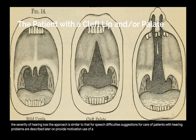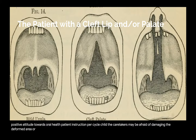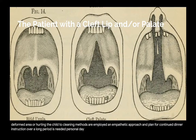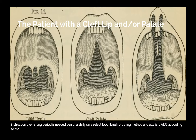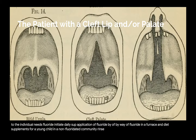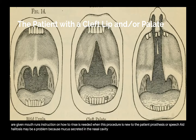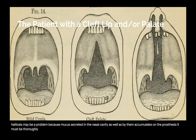Provide motivation: use of a motivational interviewing approach can help patients gain a positive attitude towards oral health. Patient instruction — personal oral care: for a small child, caretakers may be afraid of damaging the deformed area or hurting the child, so cleaning methods must be employed. An empathetic approach and plan for continued instruction over a long period is needed. For personal daily care, select toothbrush, brushing method, and auxiliary aids according to individual needs. Initiate daily self-application of fluoride by way of fluoride dentifrice and diet supplements for a young child in a non-fluoridated community. Only older children — at least age six years — evaluated for ability to rinse without swallowing are given mouth rinse. For the prosthesis or speech aid, halitosis may be a problem because mucus secreted in the nasal cavity accumulates on the prosthesis and must be thoroughly cleaned on a regular basis.